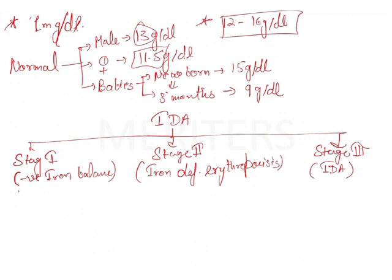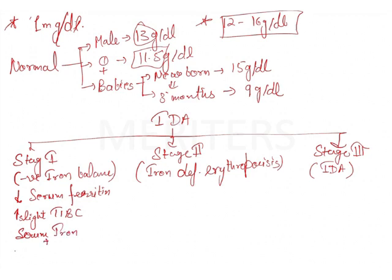In stage one, the serum iron and red cell porphyrin levels are absolutely normal. There is a decrease in serum ferritin and a very slight increase in total iron binding capacity (TIBC), but serum iron and red cell porphyrin levels remain normal.